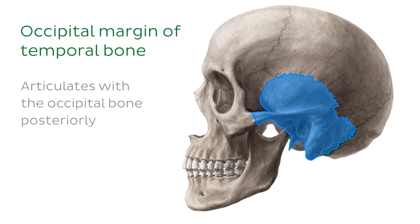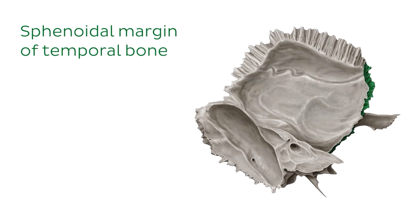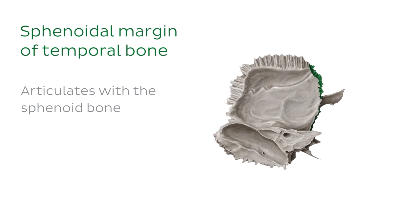If we change our viewpoint to look at the interior surface of the temporal bone, we can see another margin. This margin is known as the sphenoidal margin of the temporal bone, which is where the temporal bone articulates with the sphenoid bone. If we look at the entire skull from the same interior view, we can see the temporal bone articulating with the sphenoid bone.